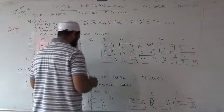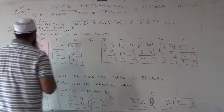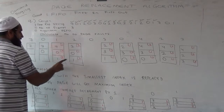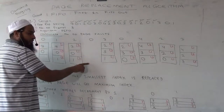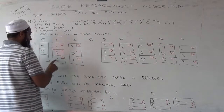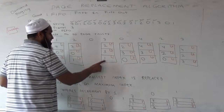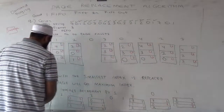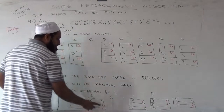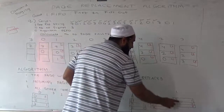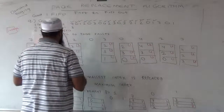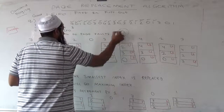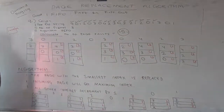Done. Now count the number of page faults you have made. One, two, three, four — leave that one — so: 1, 2, 3, 4, 5, 6, 7, 8, 9, 10, 11, 12, 13, 14, 15. The number of page faults is 15. This should be the answer.